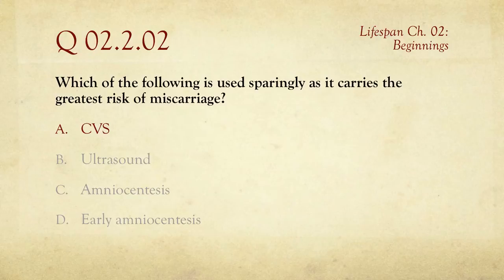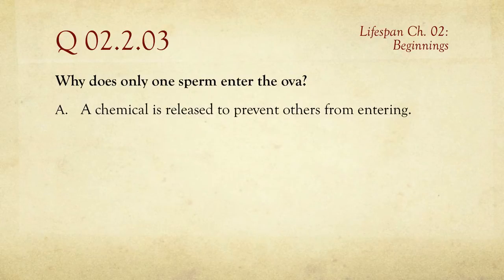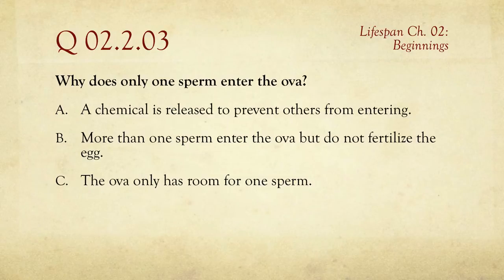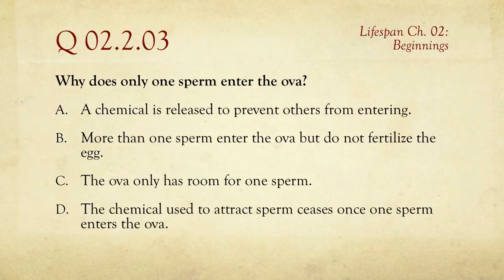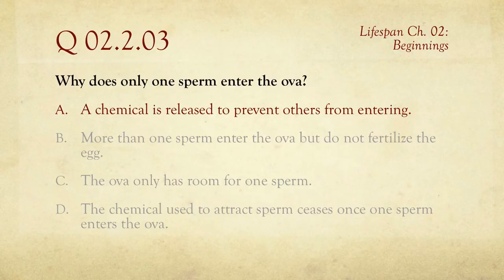Number three: why does only one sperm enter the ovum? The choices are A, a chemical is released to prevent others from entering; B, more than one sperm enter but do not fertilize the egg; C, the ovum has room for only one sperm; or D, the chemical used to attract sperm ceases once one sperm enters. The correct answer is A — a chemical is released by the egg to prevent other sperm from entering. Human ova are the largest cells we have and sperm are about the smallest, so there's a huge size difference and plenty of room, but a chemical stops reentry.